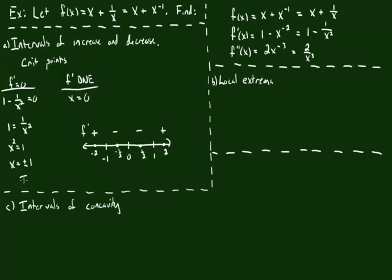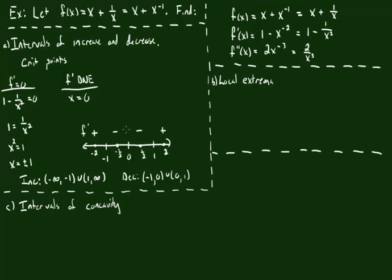This tells us we're increasing on any interval where the derivative is positive: that's negative infinity to negative 1, and 1 to infinity. We're decreasing on the intervals from negative 1 to 0, and from 0 to positive 1. We are not allowed to include 0, because the derivative does not exist there — 0 is actually a vertical asymptote of the original function, so the function has no status as increasing or decreasing there.